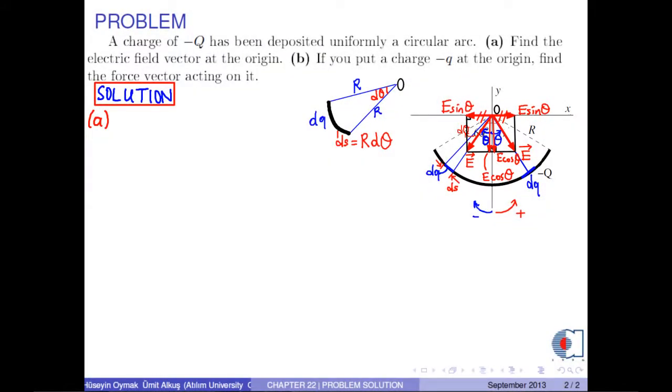Therefore, the net electric field vector at the origin for the whole arc is calculated by the integral dE times cosθ negative j hat, because it is in the negative y-axis.